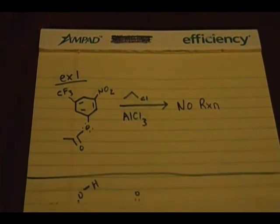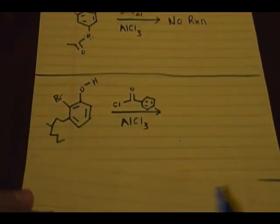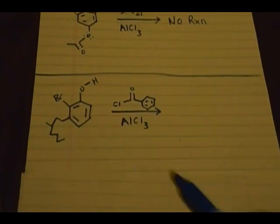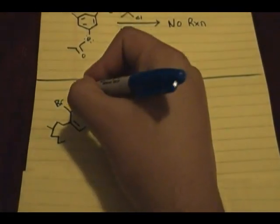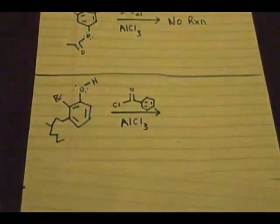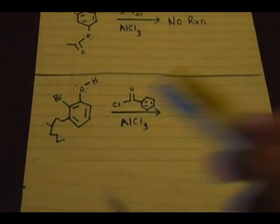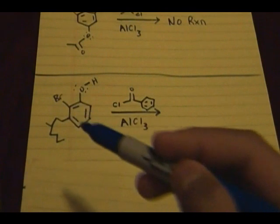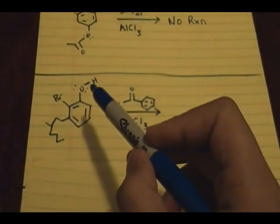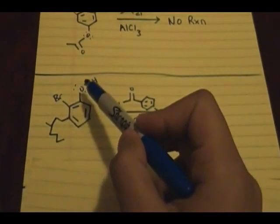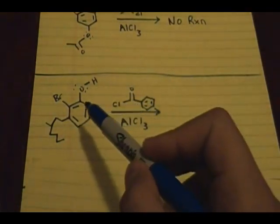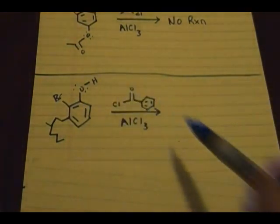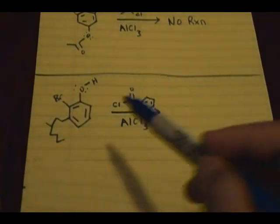Next example that we'll be discussing is this example right here. We have this halogen, this alkyl group, and this other group, this alcohol type of group here. Those of you who have guessed may have guessed that this right here would direct the positioning of the incoming group because we're doing the Friedel-Crafts acylation, and you guys are correct.